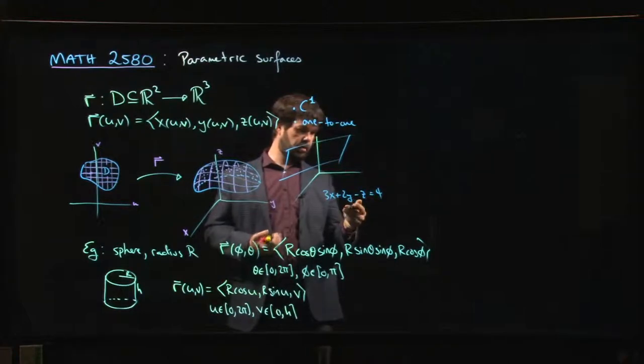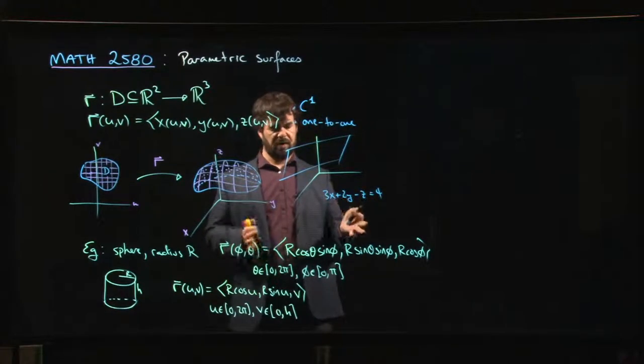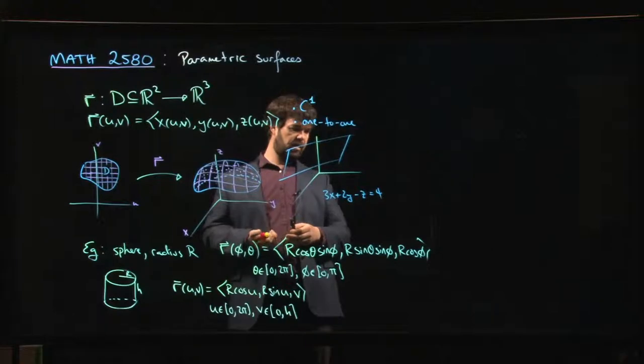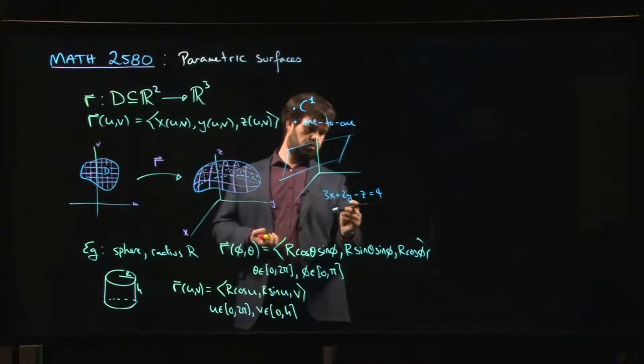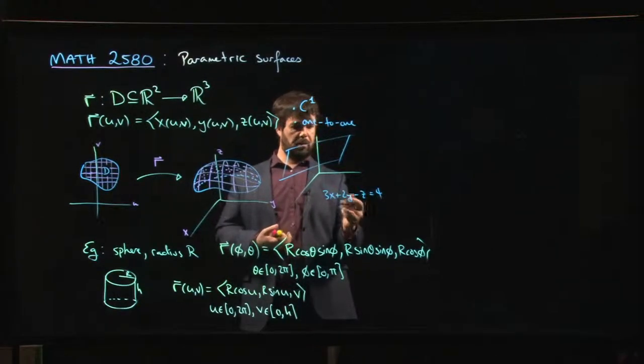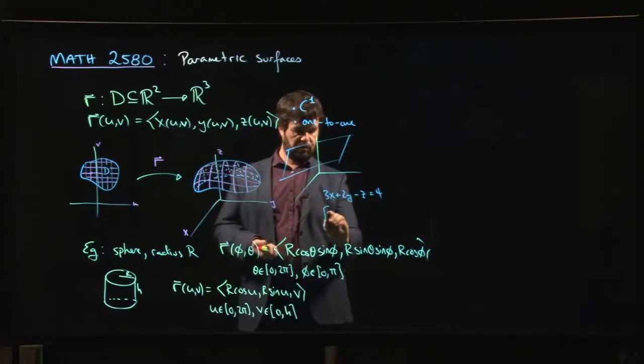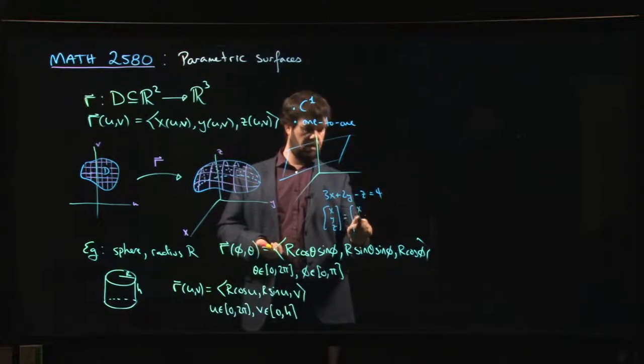Maybe I choose x and y to be parameters. A general vector (x, y, z) - if I solve for z - I could do (x, y, 3x + 2y - 4).